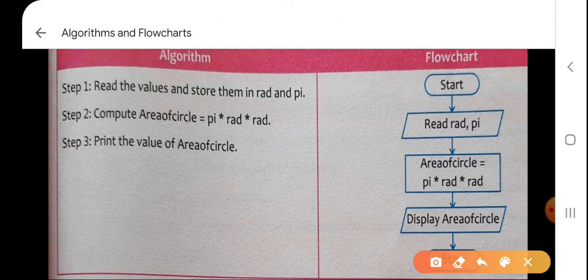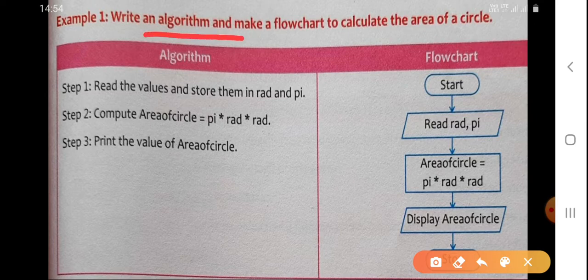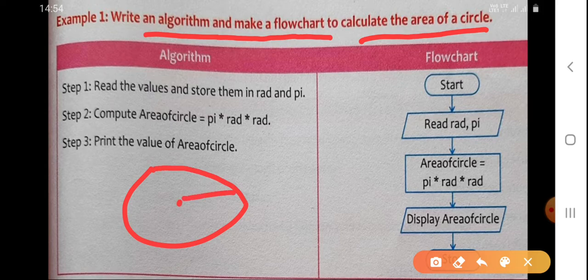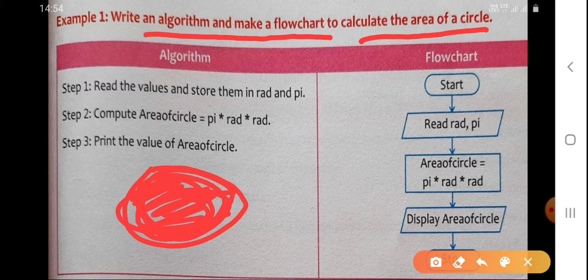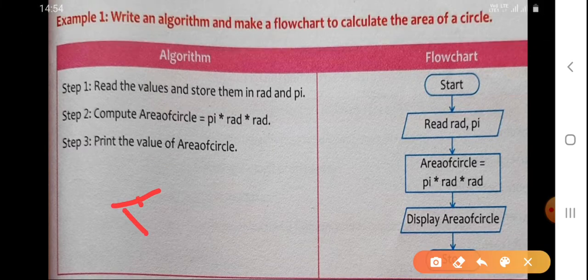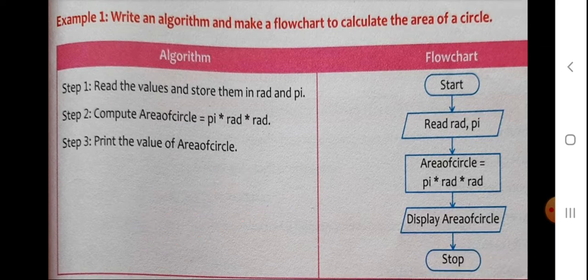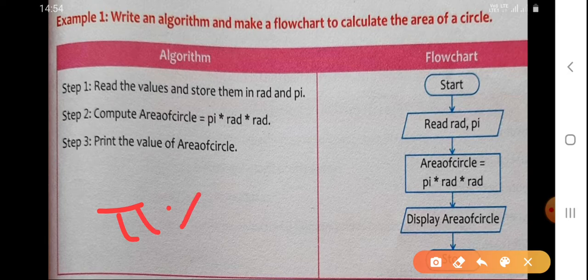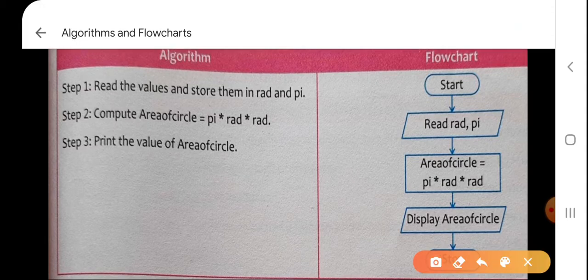In the first example, the problem is we have to write an algorithm and make a flowchart to calculate the area of a circle. In mathematics or geometry, you have already studied that if this is a circle and this is the radius, then to calculate the entire area occupied by this circle, the formula is pi r squared, or pi into r into r.